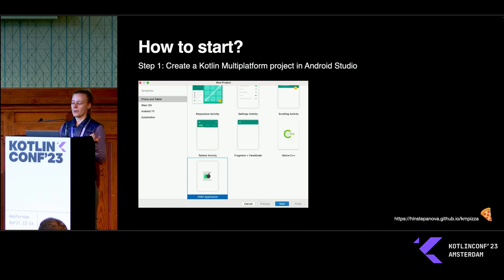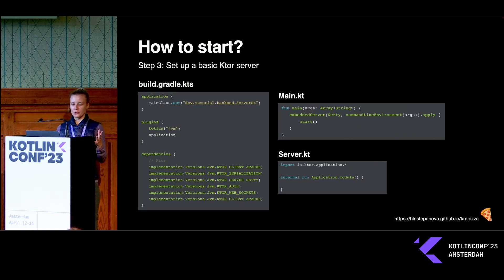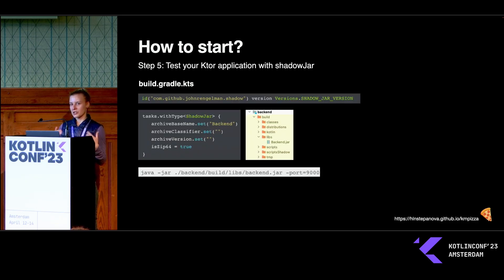I started with creating a starter KMP project using the KMP plugin — you create a shared module divided into Android, iOS, and common, and you can extend it with other modules like backend. My next step was adding the backend module as my dedicated place for all backend experiments. I added Ktor dependencies to my backend module's Gradle file, set up the basic server, added my first route function returning a basic hello, then used shadow jar to create a package and ran it locally — and it worked.